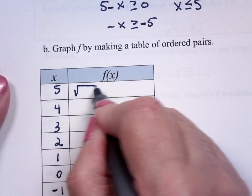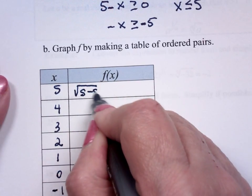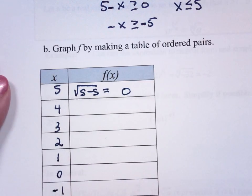This is the square root of 5 minus 5. Well, that's 0. Square root of 0, which is 0.